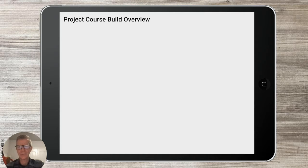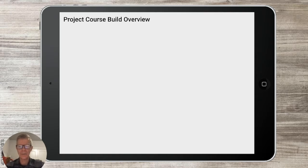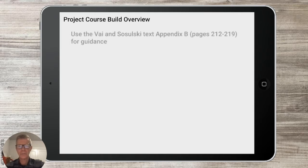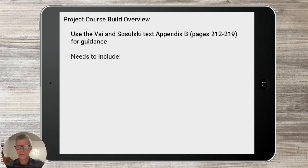But the purpose of this video, as I mentioned previously, is to give you some details about the course build. We're going to do a very quick overview of the overall assignment and then spend a little bit of time on how the reflective activity has changed. Just remember to use the Vian Sosolsky text, Appendix B, pages 212 through 219, for some guidance on that. There's a nice checklist in there that'll help you understand the detail and expectations.